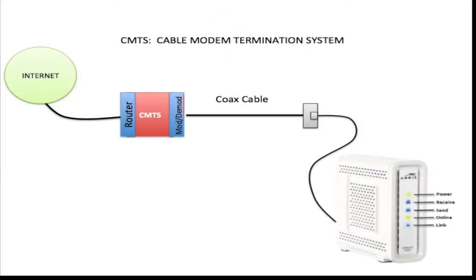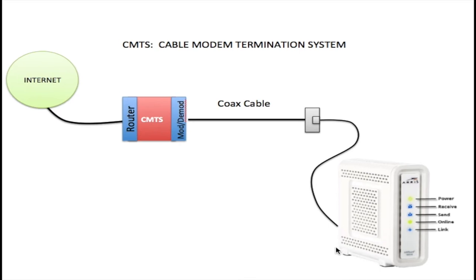When you connect your modem to an active cable jack and power it up, the modem scans the downstream frequencies on the coaxial cable looking for 64 or 256 QAM digitally modulated signals, which are the type of signals sent by your CMTS. Once this signal is found, the modem searches for a key piece of information within the signal called UCD.